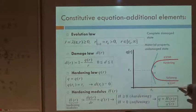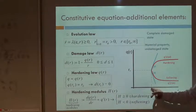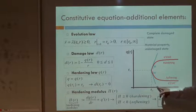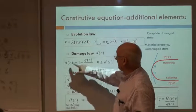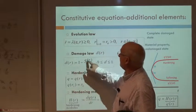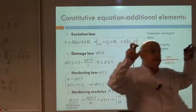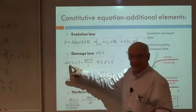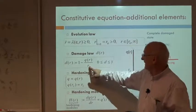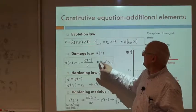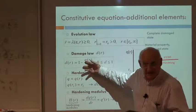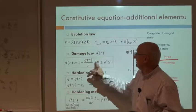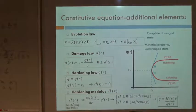So, if we plot R: initially for the virgin material it starts at R₀, which is a positive value, and then it's always positive and can increase up to infinity. Then I define the damage law: D is defined as 1 minus Q over R. That's the definition of D, the damage variable. So D has to be in the range [0, 1], which places some limitations on Q.